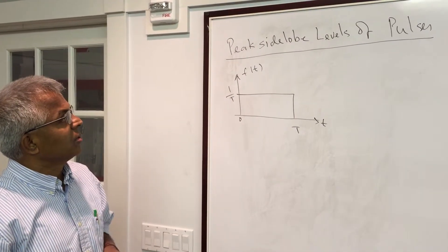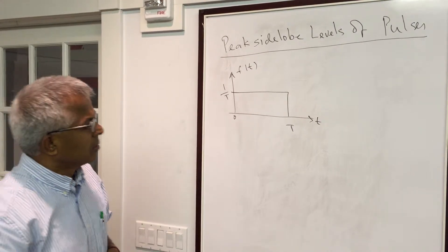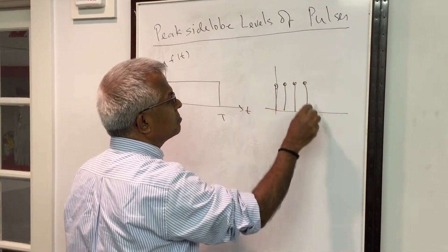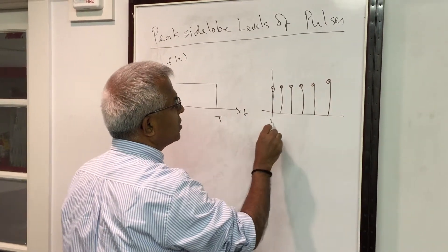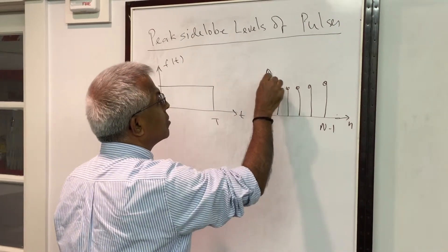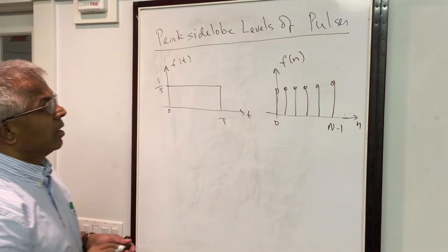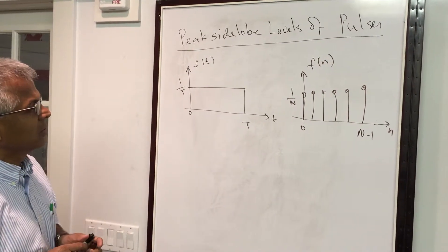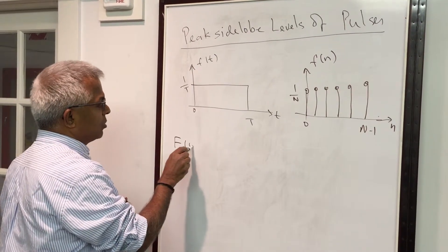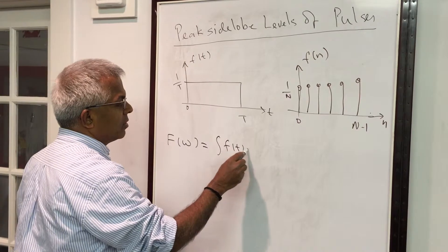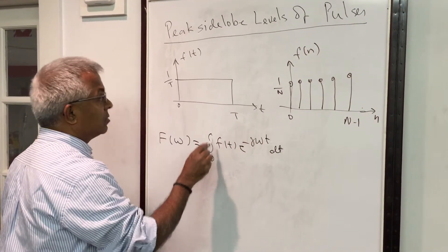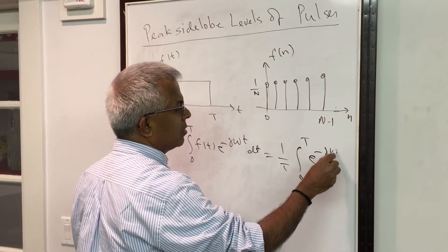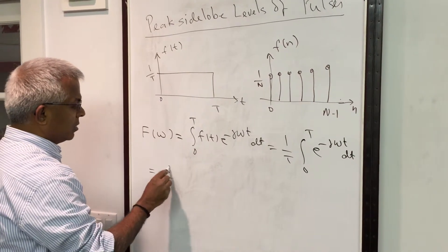I want to show you something on the peak side lobe levels of pulses. In the discrete case, suppose we have a discrete pulse of the same intensity — let's say n points. For reasons that will become clear, let me take the pulse to be of height 1 over T. If you look at its Fourier transform, this is the integral from 0 to T of f(t) e^{-jωt} dt. Substituting f(t) = 1/T, this is 1/T times the integral from 0 to T of e^{-jωt} dt.